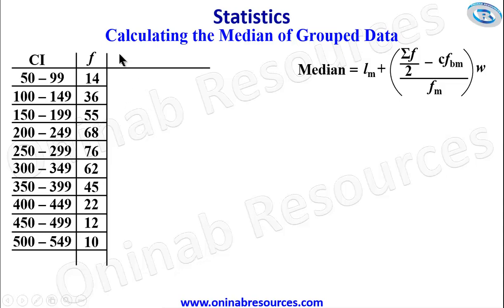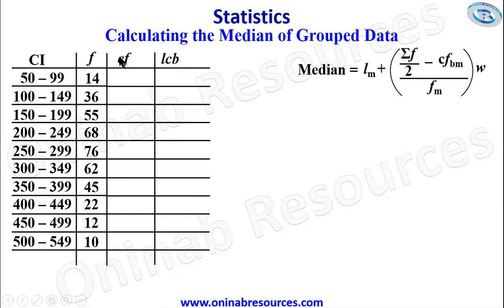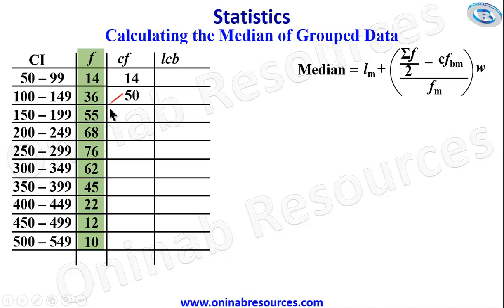We create additional columns on the table for cumulative frequency and lower class boundary. For the first class interval the frequency is 14, so the cumulative frequency is 14. For the next class interval, we add 14 to 36 to get 50. Then 50 plus 55 gives 105, and 105 plus 68 gives 173.